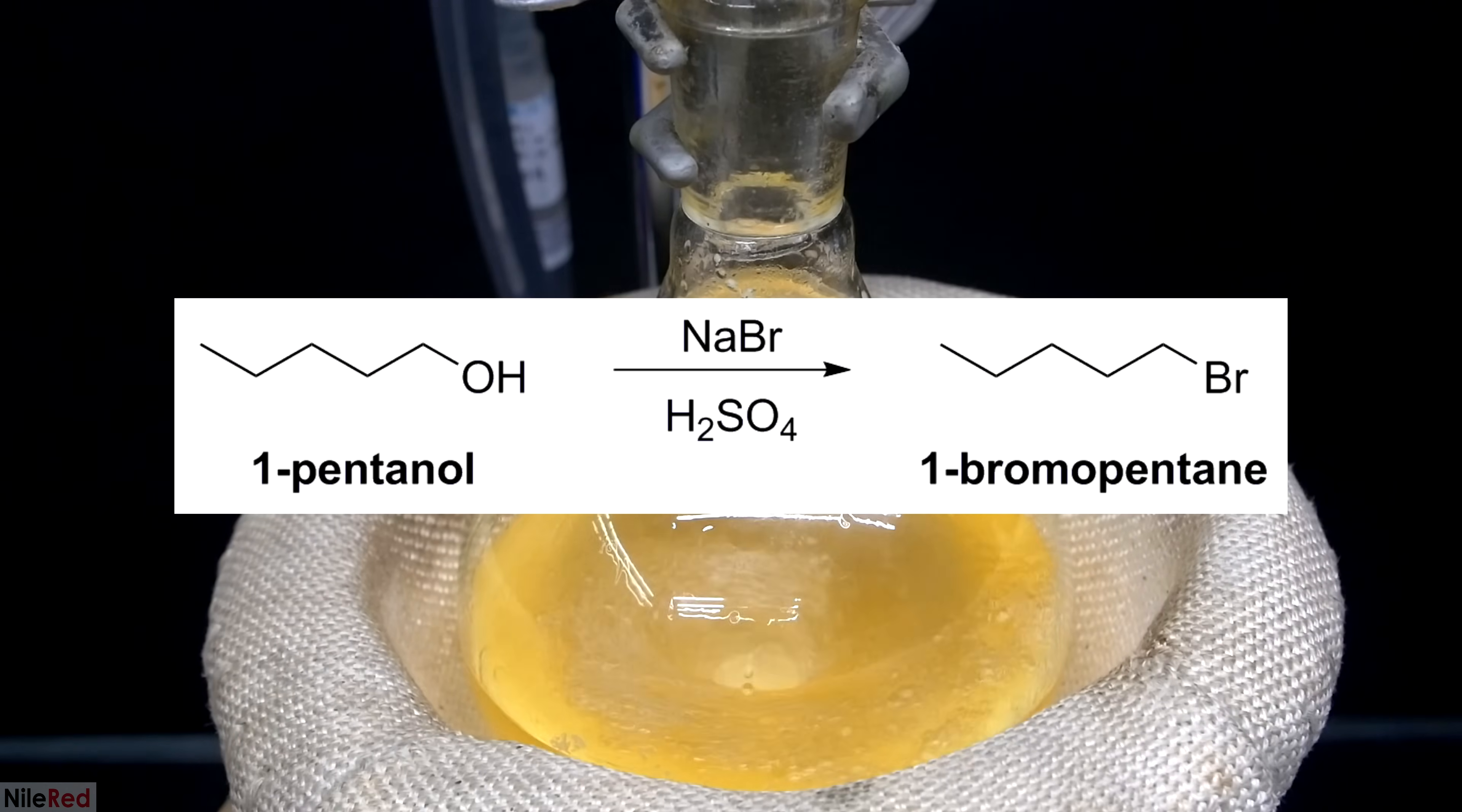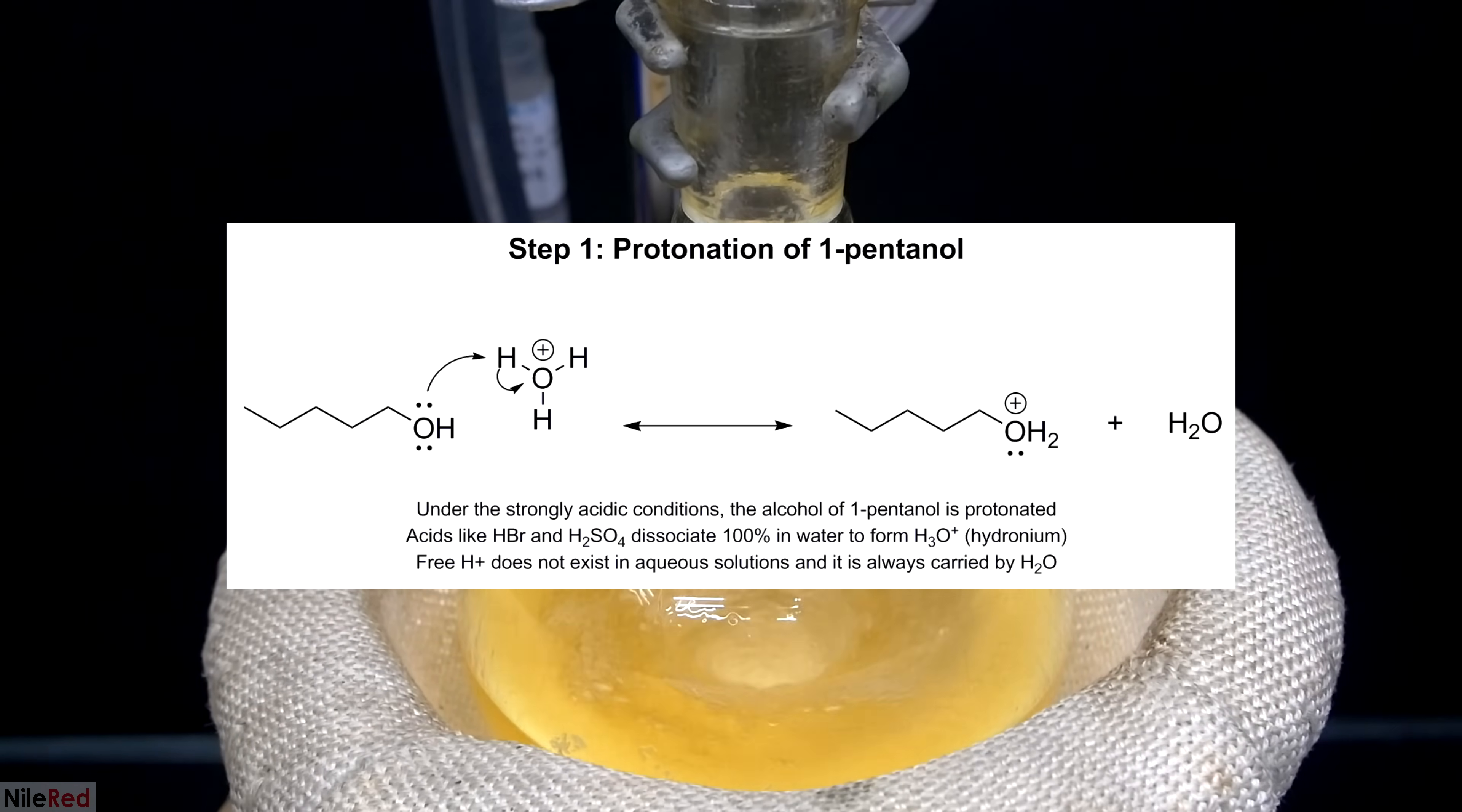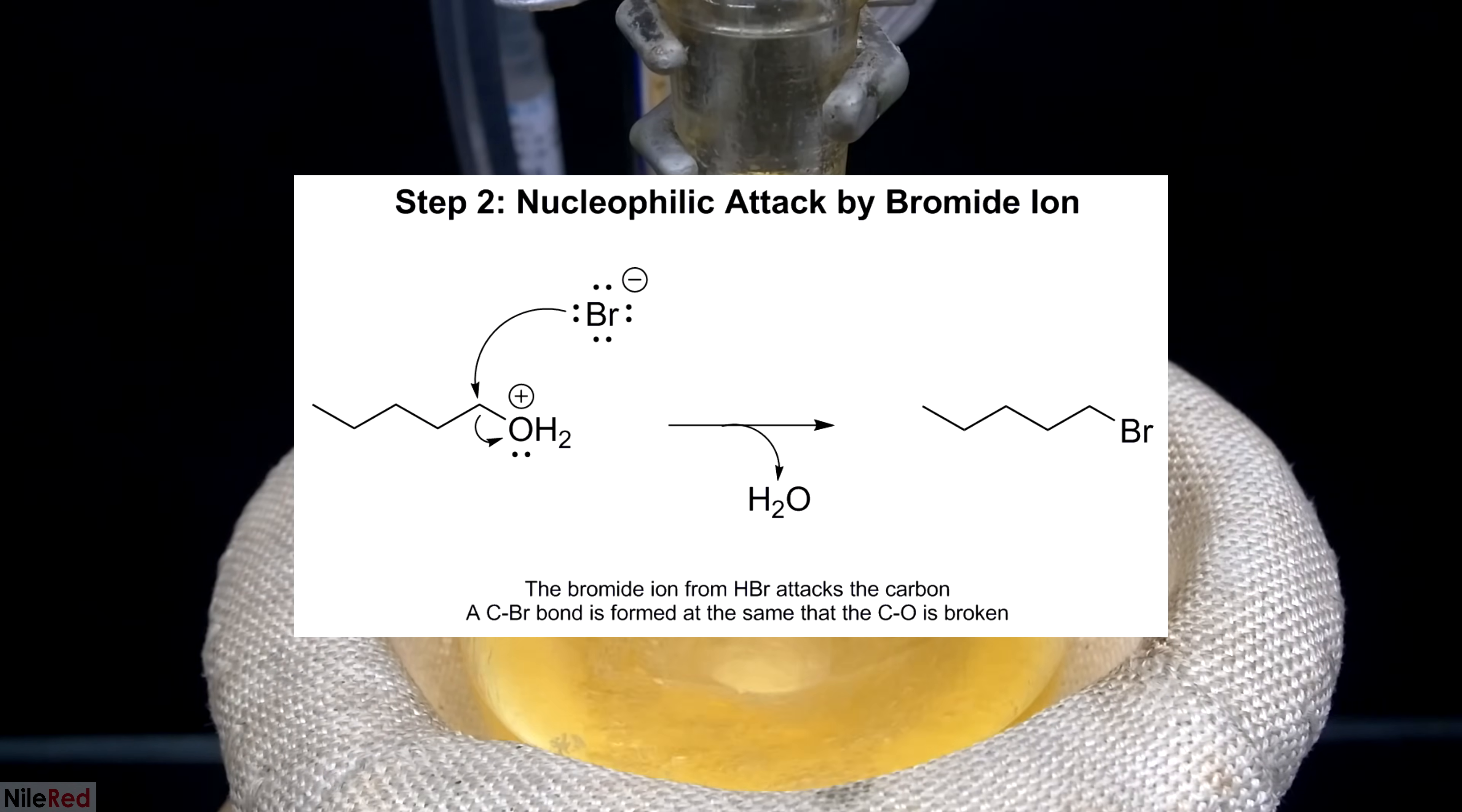Now I'm just going to quickly go over the mechanism. In the first step, the hydroxyl group of 1-pentanol is protonated to form a water molecule. The water molecule that's formed is quite stable on its own, and it's pretty much just looking for an excuse to leave. In one concerted step, a bromide ion from hydrobromic acid attacks, and the water molecule pops off. In organic chemistry, there are many types of substitution reactions, but this one is specifically known as SN2.